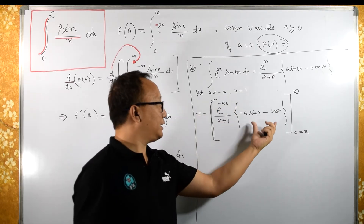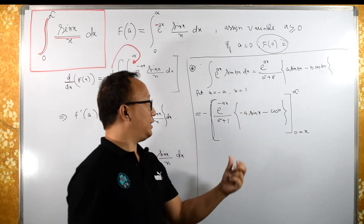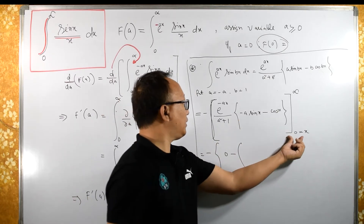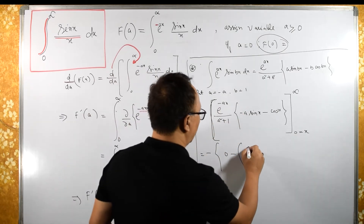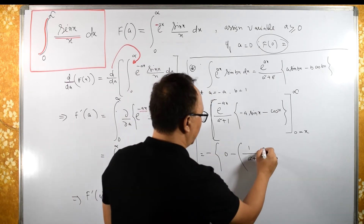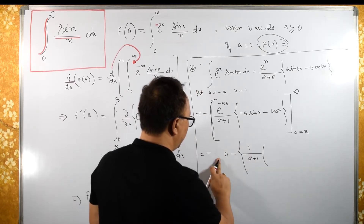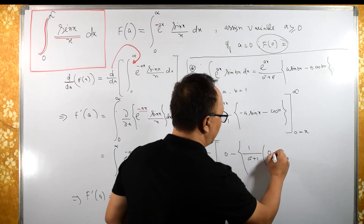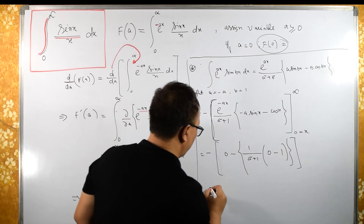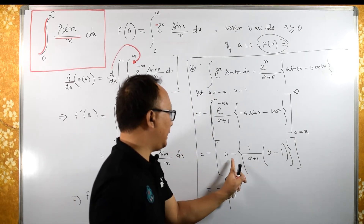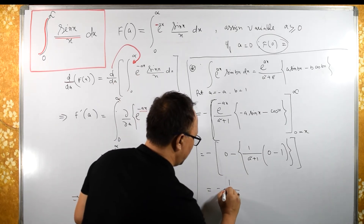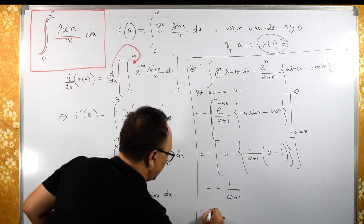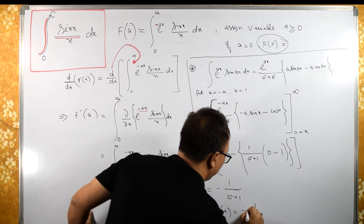When x tends to infinity, e^(-ax) becomes 0, so the upper limit gives 0. For the lower limit when x = 0: e^0 = 1, giving 1/(a² + 1). Then sin(0) = 0 so that term vanishes, and cos(0) = 1, so we get minus 1. Accounting for the three minus signs, we get 1/(a² + 1). Therefore f'(a) equals −1/(a² + 1).